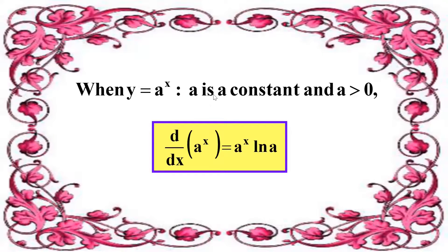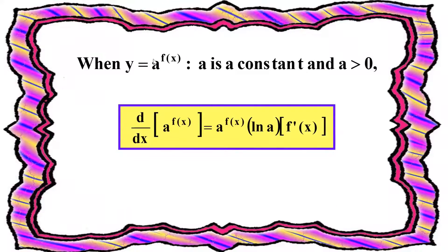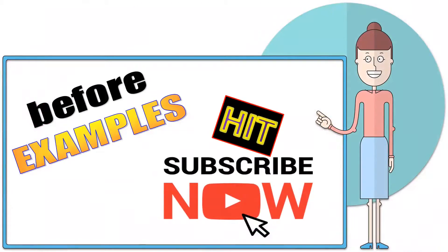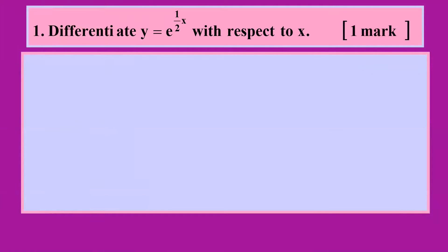If what is given is y = a^x, where a is a constant greater than zero, when we differentiate it we write a^x times ln(a) beside it. If the constant has a function as the power, we copy a^(f(x)), write ln(a), then differentiate f(x) and write it beside it.